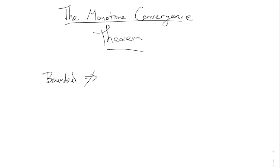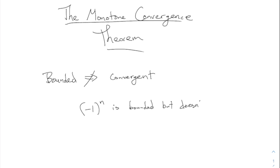Bounded, in general, does not imply convergence. That's because, for example, (-1)^n is bounded but doesn't converge. The word is diverges — the opposite of converges is diverges. Diverges does not mean that it goes to infinity necessarily; it just means it doesn't converge to any particular number. (-1)^n is bounded because all the absolute values are either plus one or minus one, but it does not converge. It diverges.